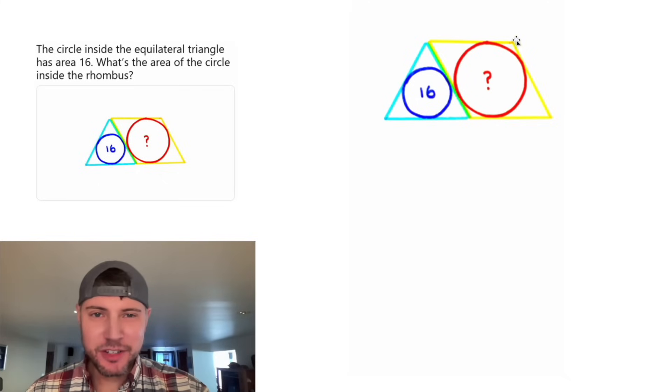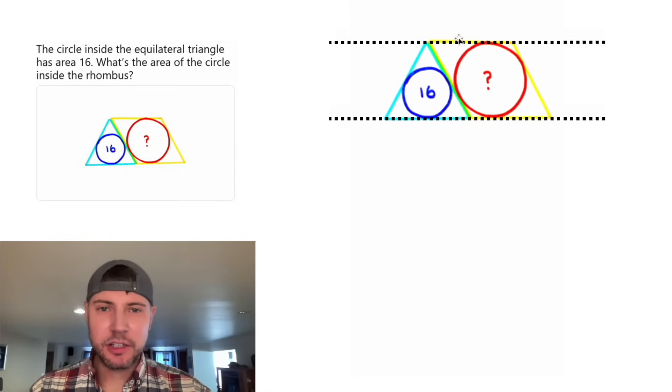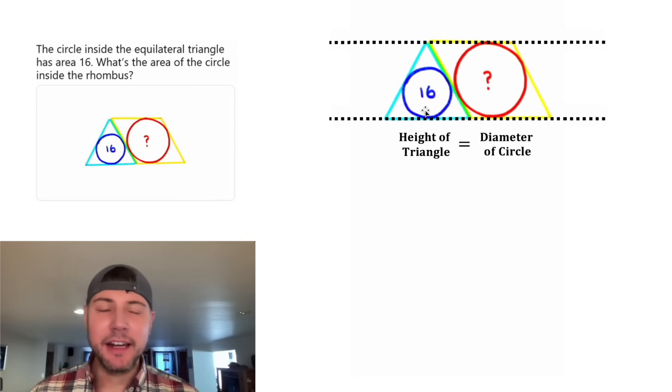So I'm thinking all the rhombus is doing is just showing us that this is the same height as this. So let's mark the base with the dashed line and the top of the dashed line. So these two heights are the same. And more importantly, the height of the triangle is equal to the diameter of the circle.